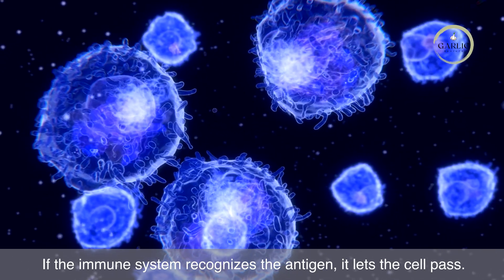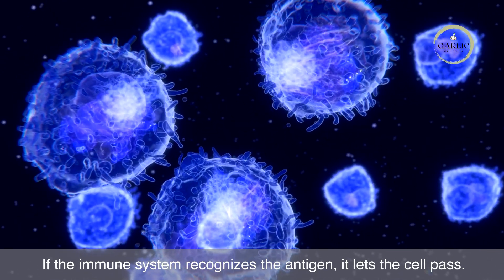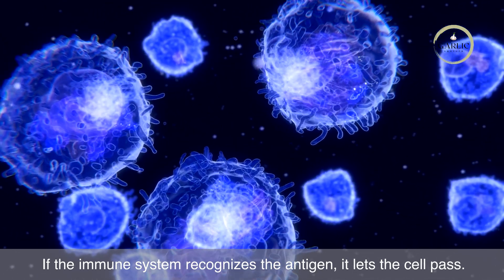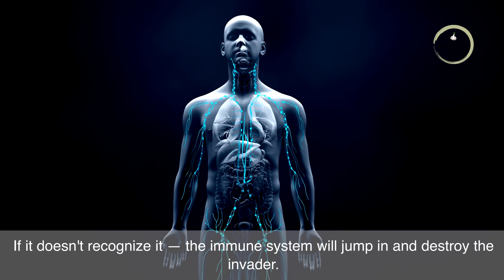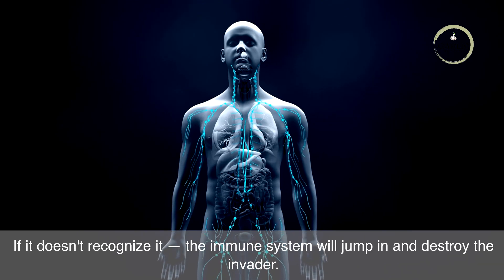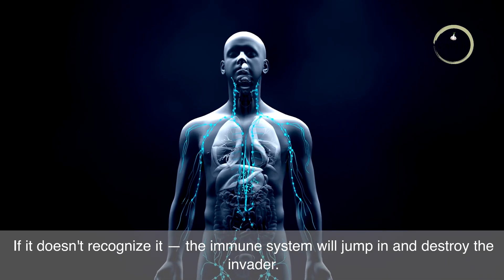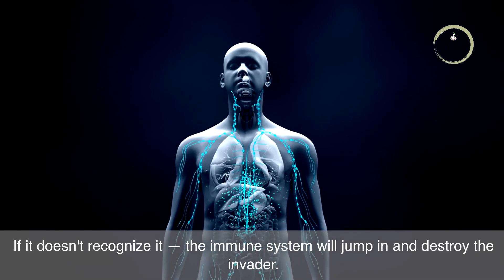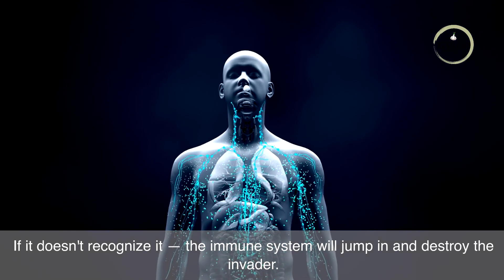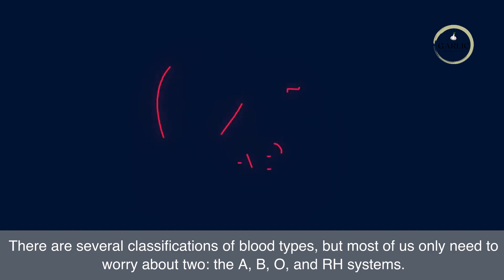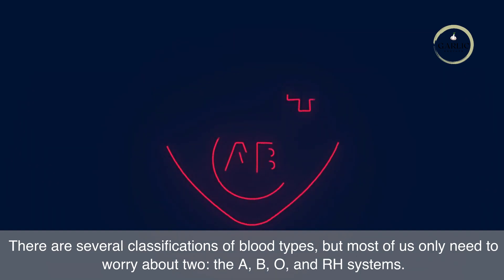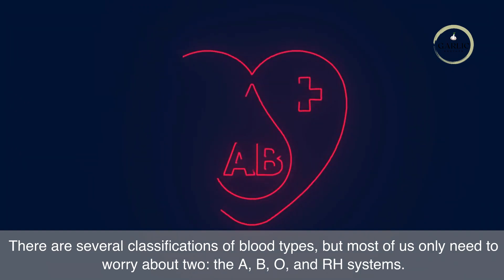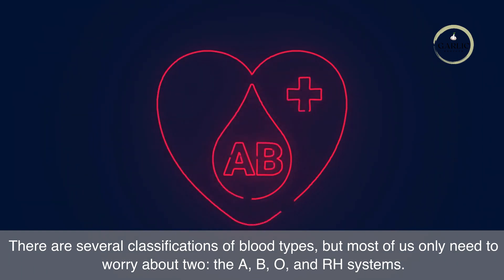If the immune system recognizes the antigen, it lets the cell pass. If it doesn't recognize it, the immune system will jump in and destroy the invader. There are several classifications of blood types, but most of us only need to worry about two: the ABO and RH systems.